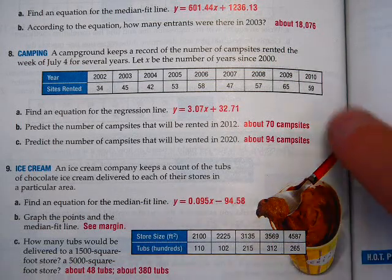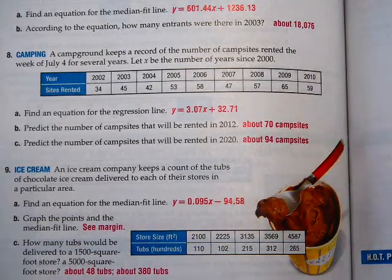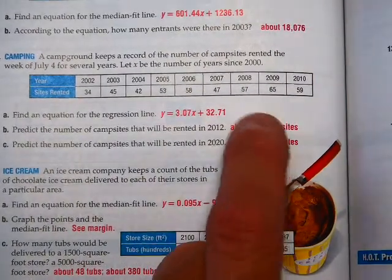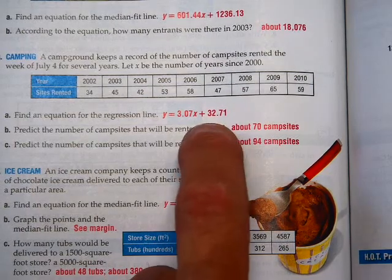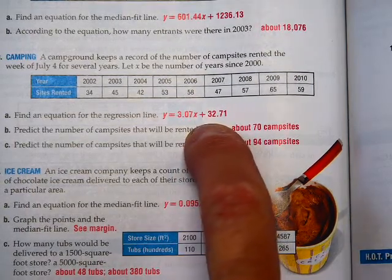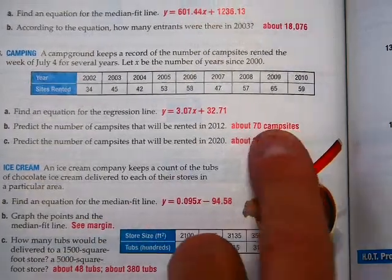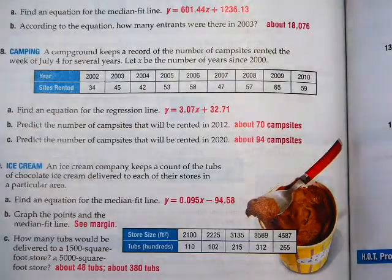Let's take a look at eight. Three-point-zero-seven X plus 32.71. And your slope, I'd say, somewhere between 2.2 and 3.8 maybe. And your Y-intercept is going to be different, especially if you didn't follow their advice and say use the year since 2000.